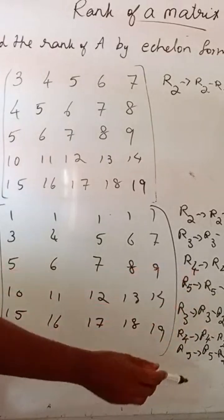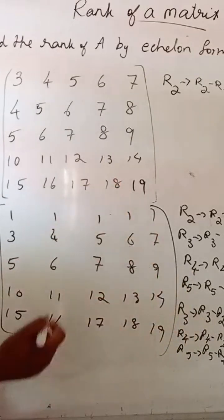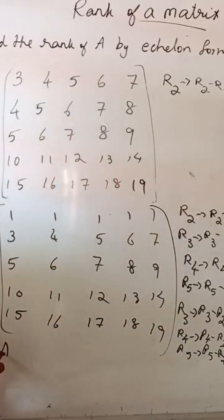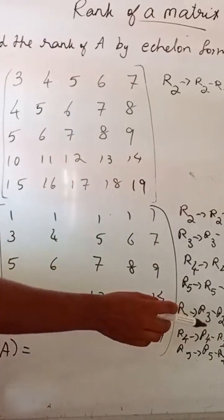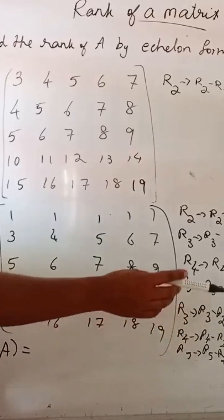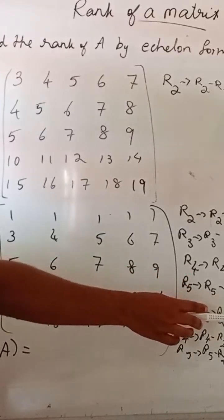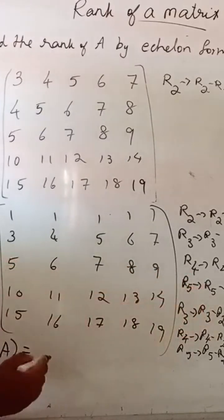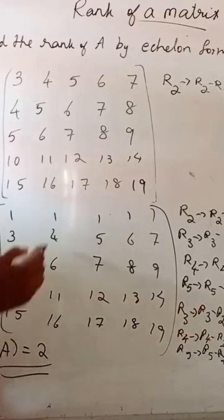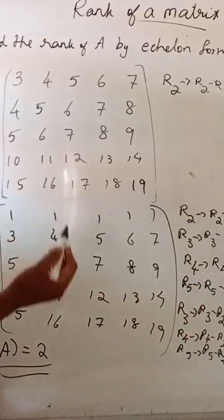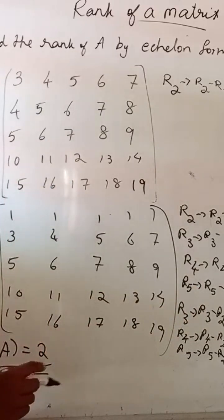So, what is the rank of this matrix? Rank of A is equal to the number of non-zero rows. The number of non-zero rows are 2. So, rank of this 5 by 5 matrix is equal to 2.